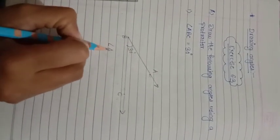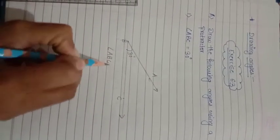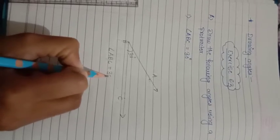You can write this angle as angle ABC equals 30 degrees.